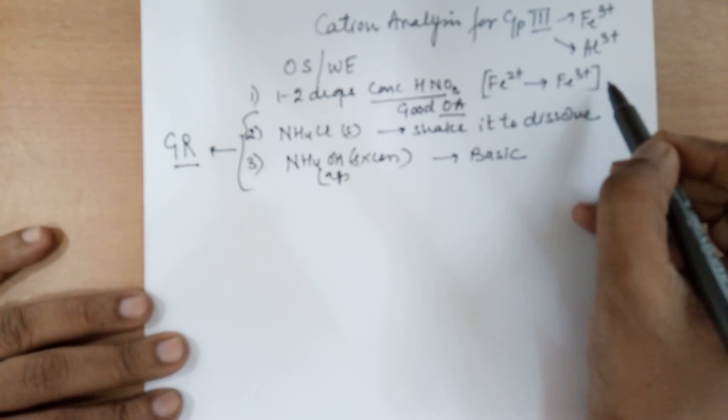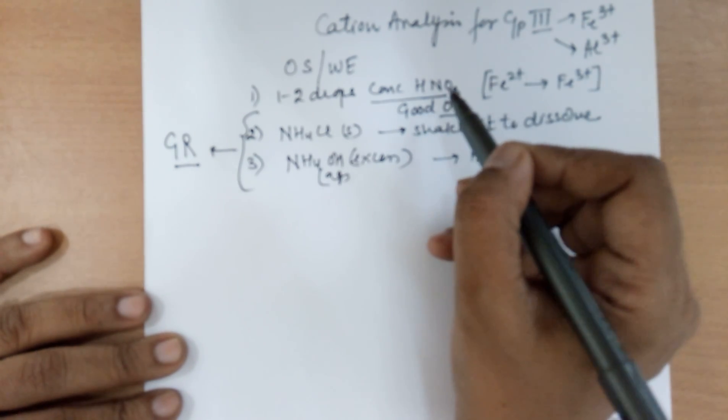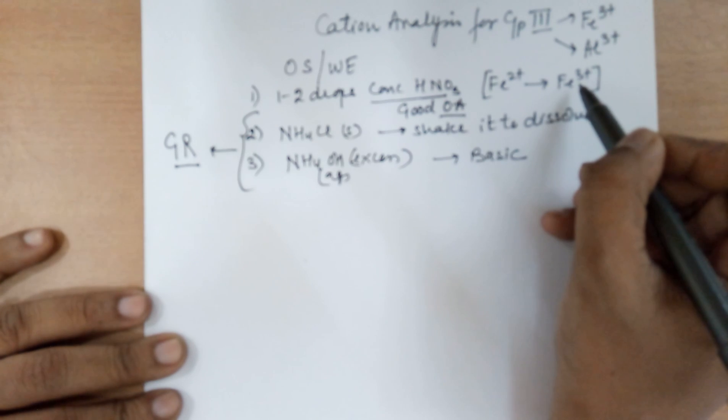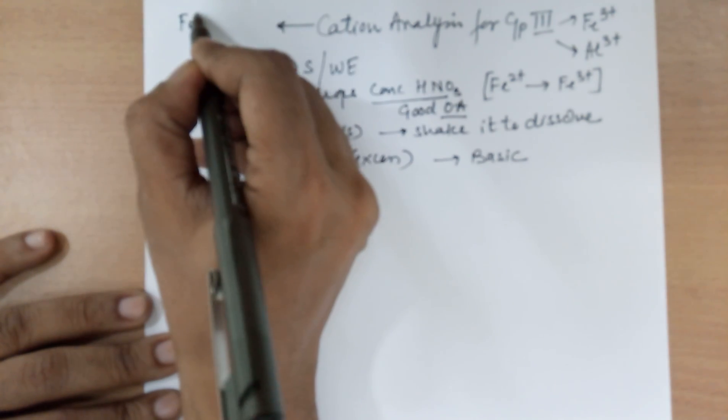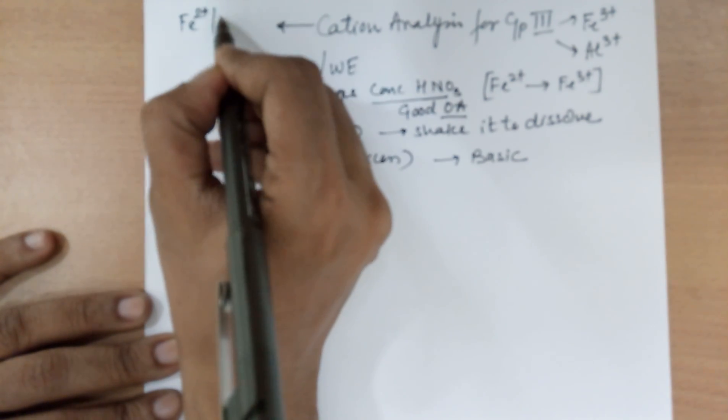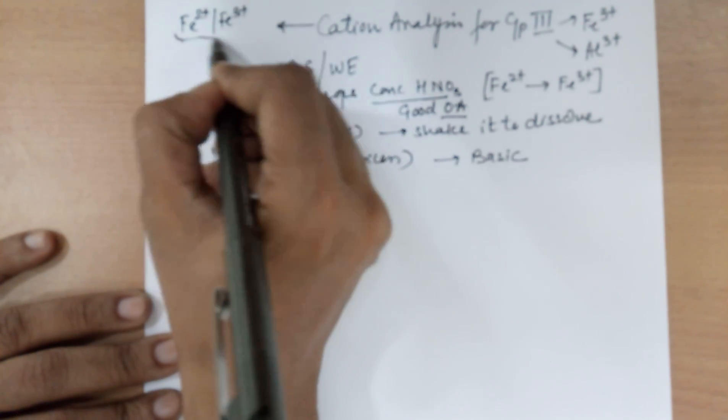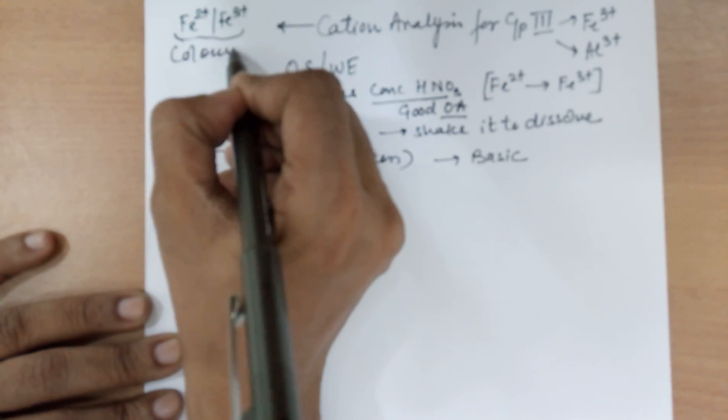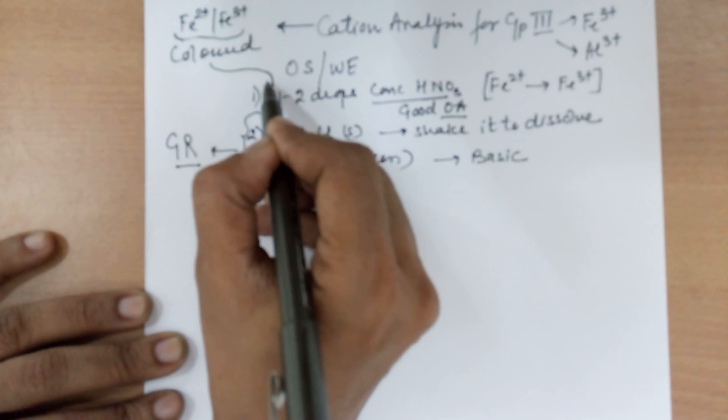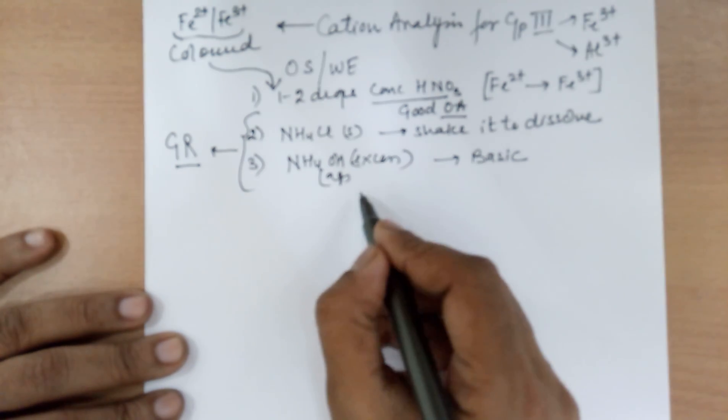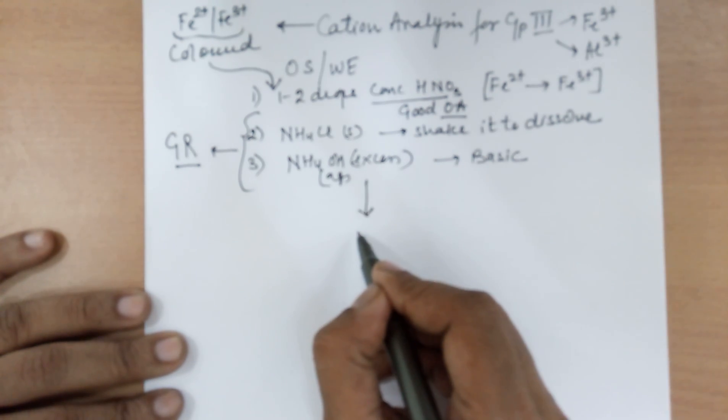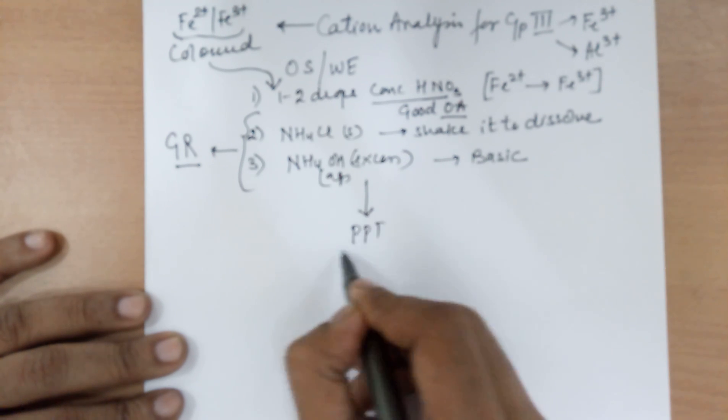In case of addition of nitric acid, which is only applicable to convert ferrous to ferric, this would only be for a colored salt. In case of the cations, only if you have ferrous or ferric, then the salt would be colored. And if the salt is colored, you need to follow the first step, otherwise you may not. For white salts, you can skip the first step. After the addition of these three things, you would end up with a PPT.